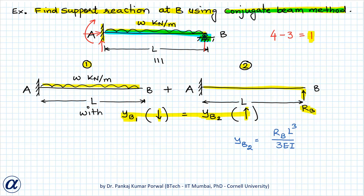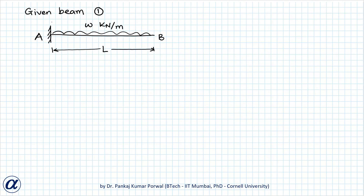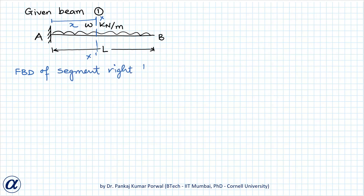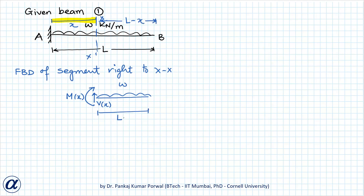To use the conjugate beam method, I first need to find the bending moment diagram of structure 1. Taking a section at distance X from the fixed end, labelled X-X, and drawing the free body diagram of the segment to the right of X-X, the remaining length is L minus X.